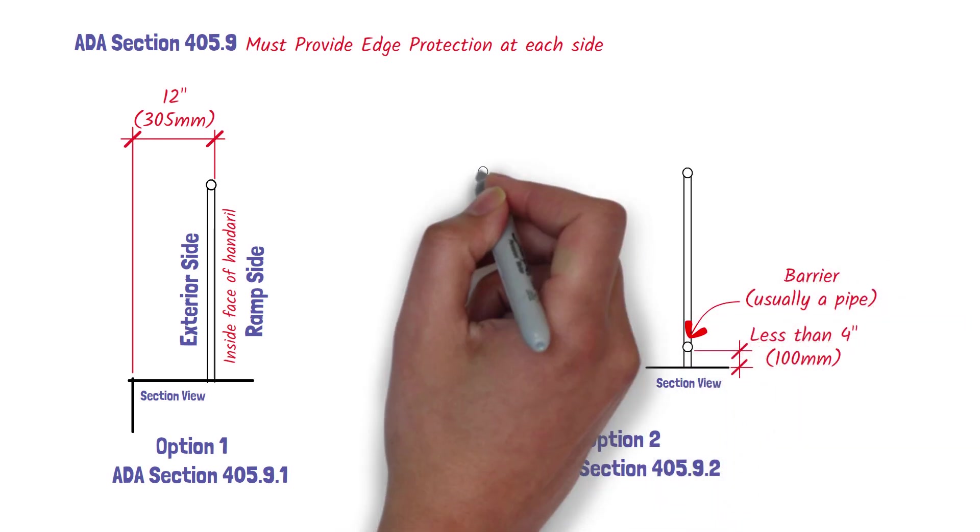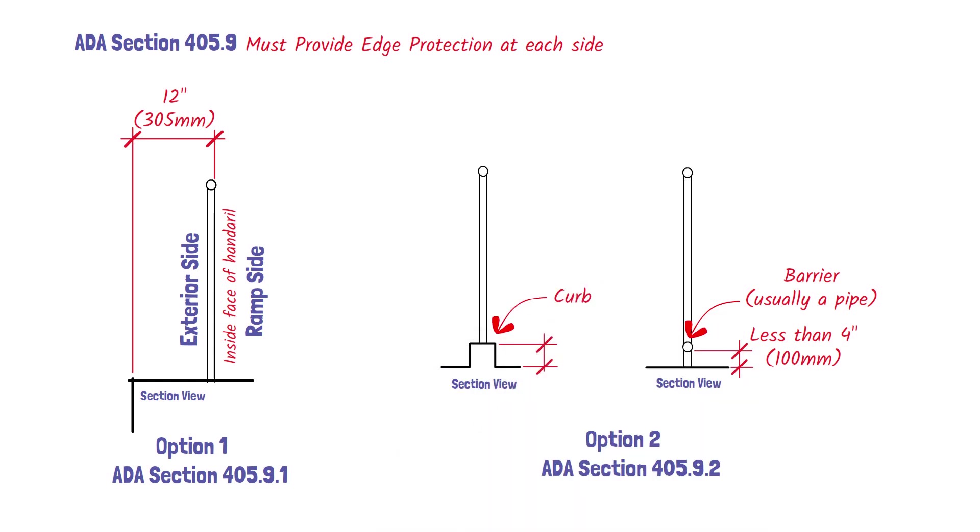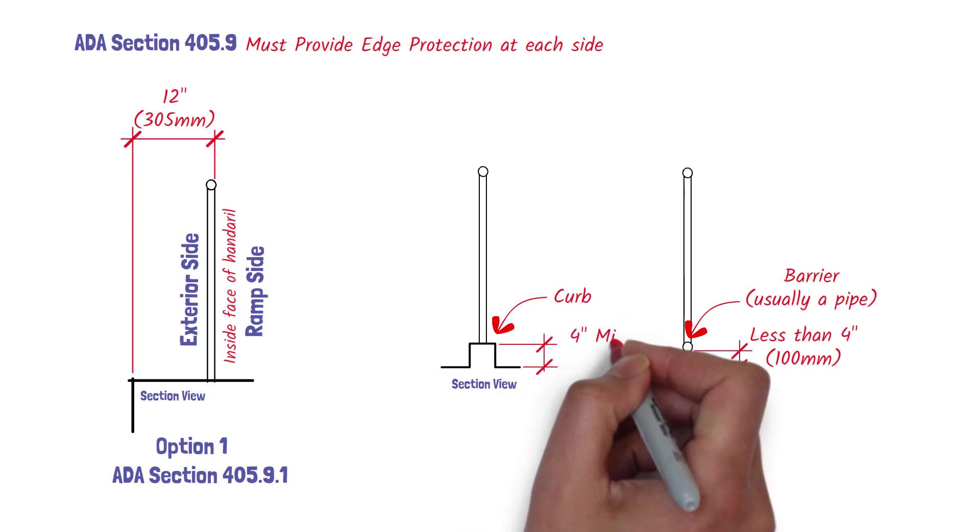Now, it may seem obvious that if you use a curb as a barrier, it will not let a sphere through. What is not so clear is that a curb also needs to be a certain height. In most instances, this curb is not less than 4 inches.